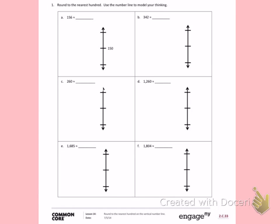This is Lesson 14 Homework, Side 1. Today's objective was to round to the nearest hundred on a vertical number line. Number 1. Round to the nearest hundred. Use the number line to model your thinking.